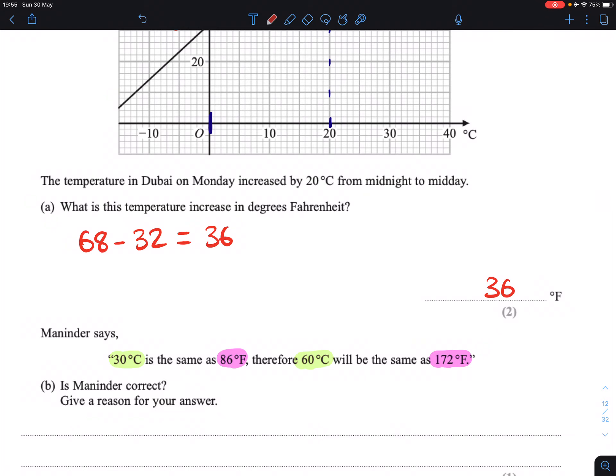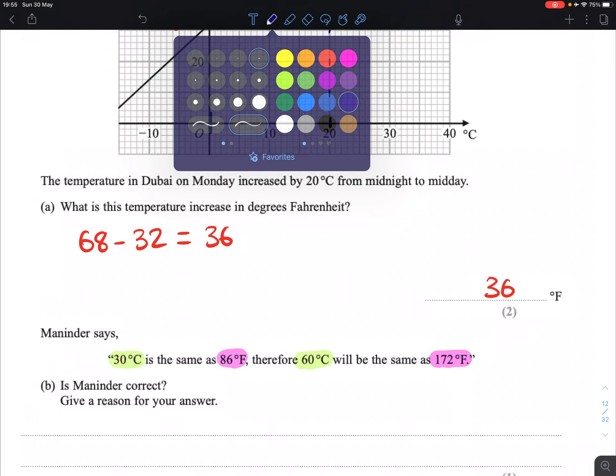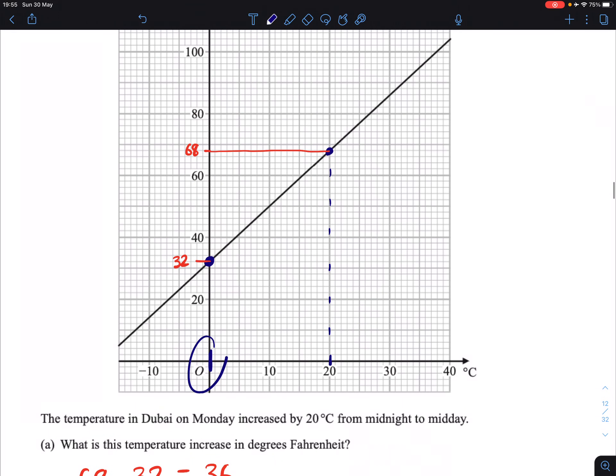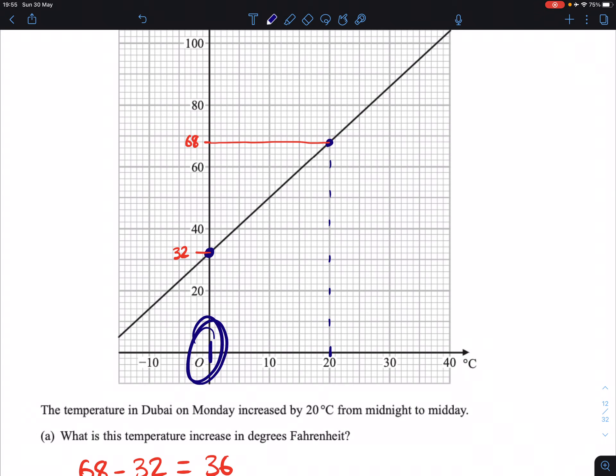Well, the only way that that could work is if our graph here crossed through the origin. In other words, if 0 degrees Celsius was the same as 0 degrees Fahrenheit, then this statement would be correct, because we would have something called direct proportion. But the fact that this straight line doesn't cross through that means it will not work.